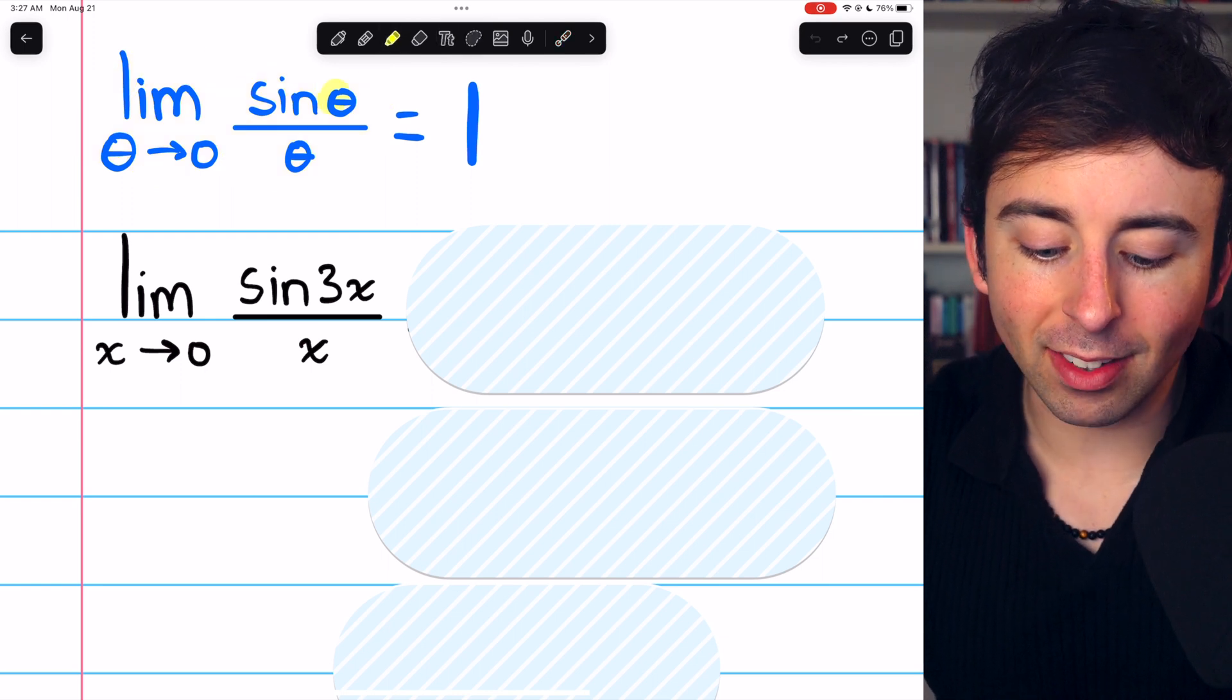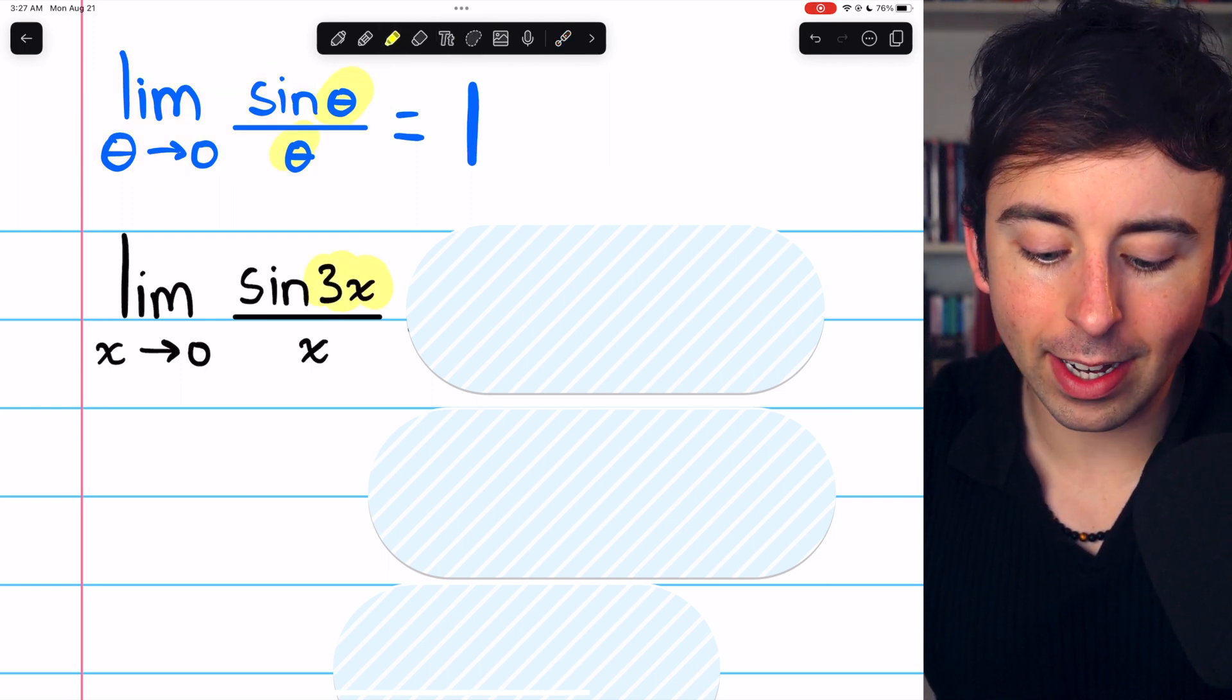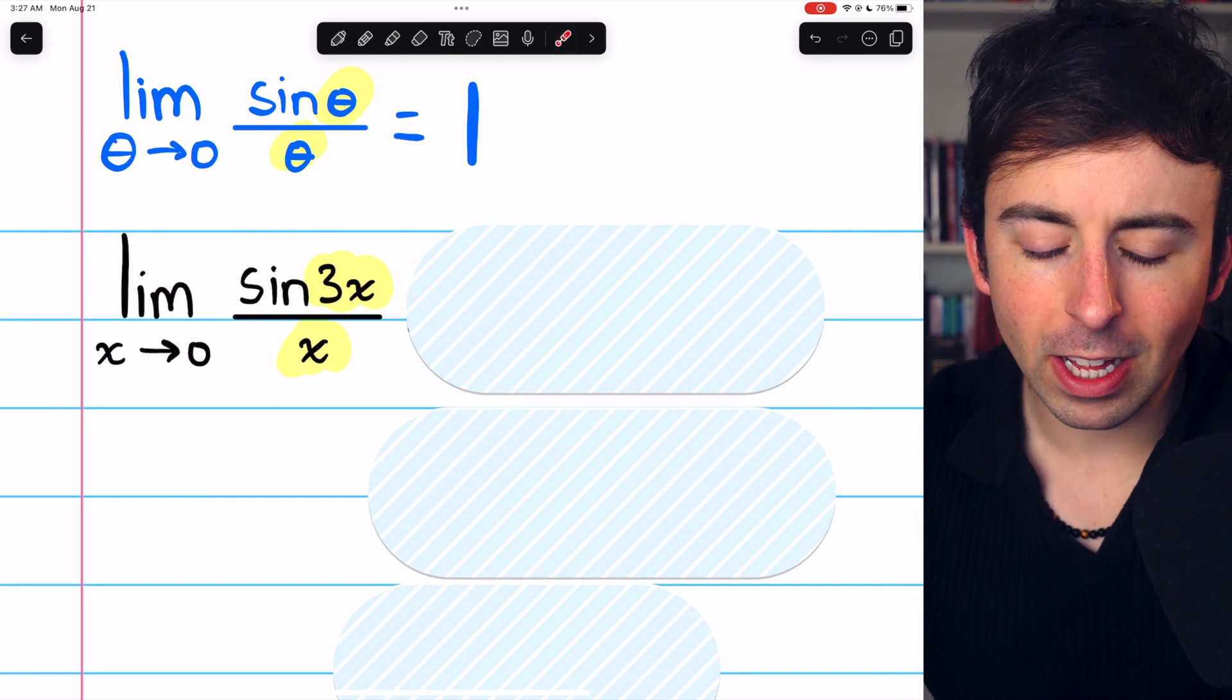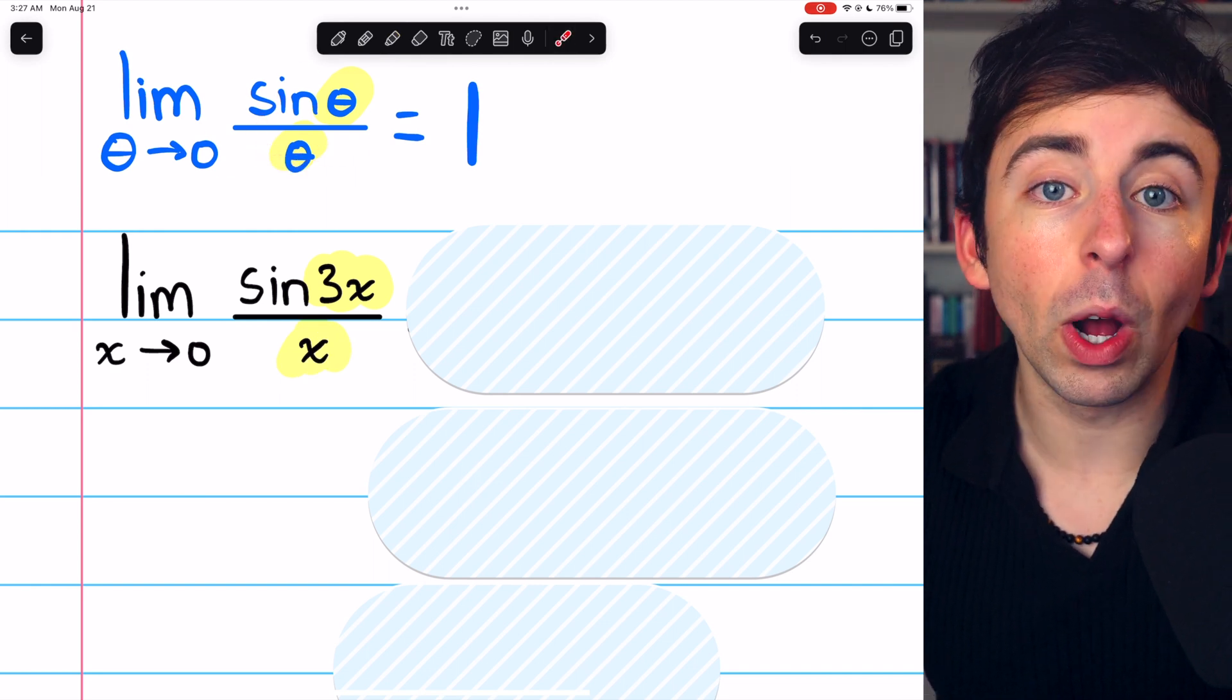What that really means is that we want the input of sine to match the denominator, just like it does in this well-known limit.